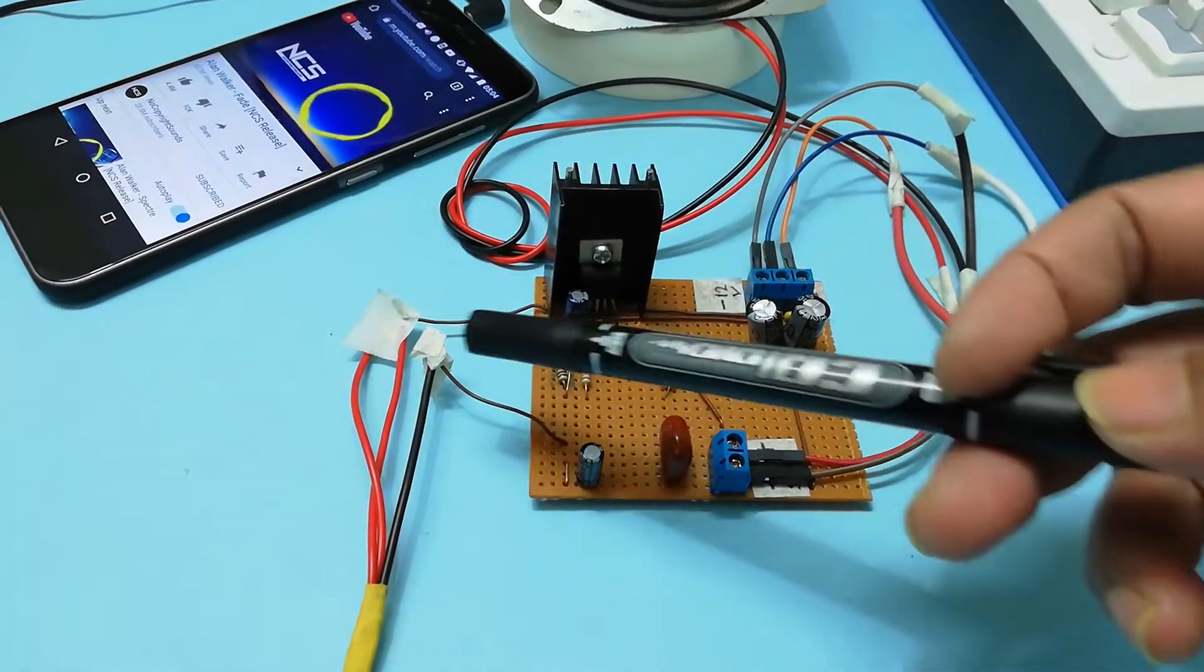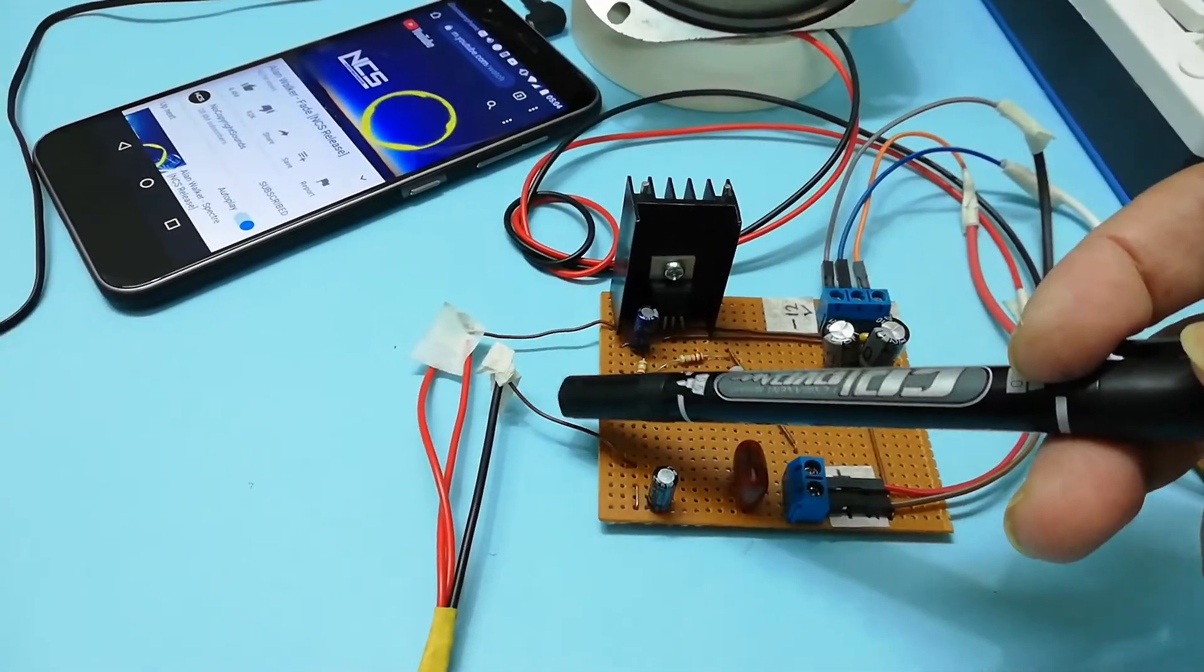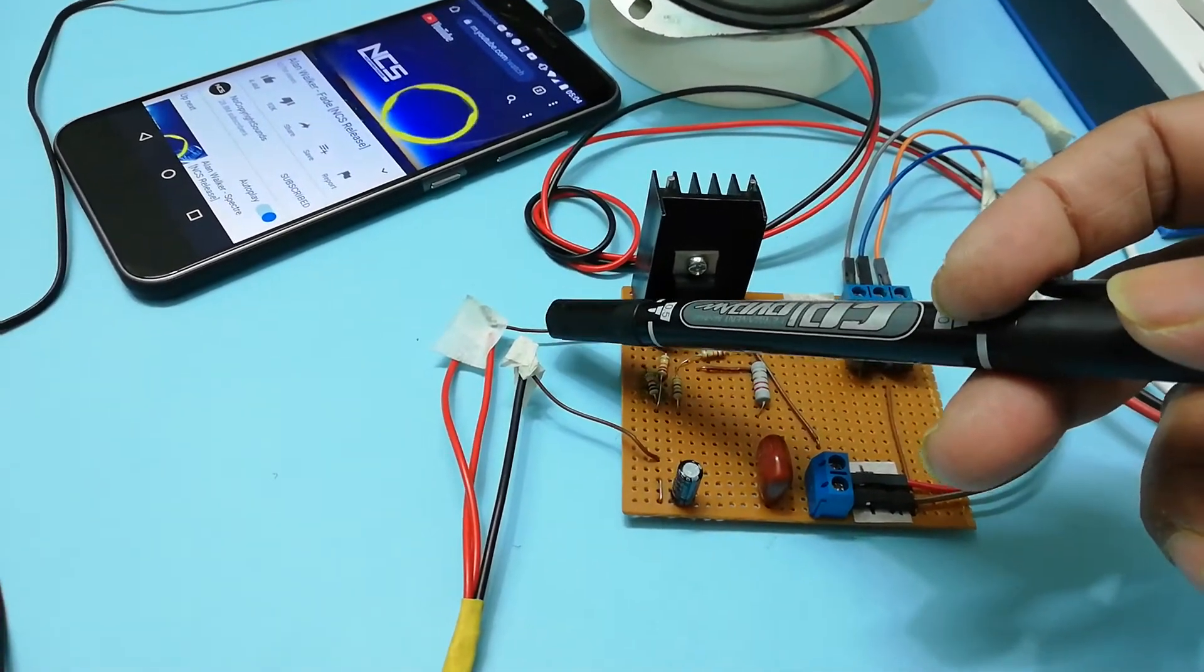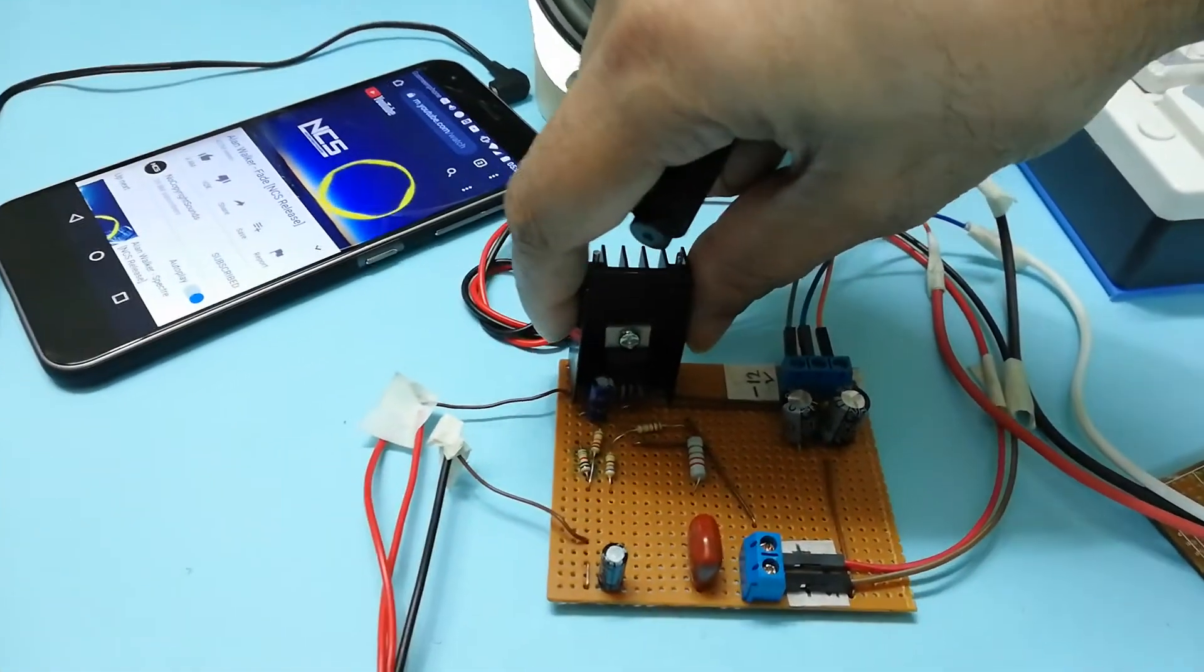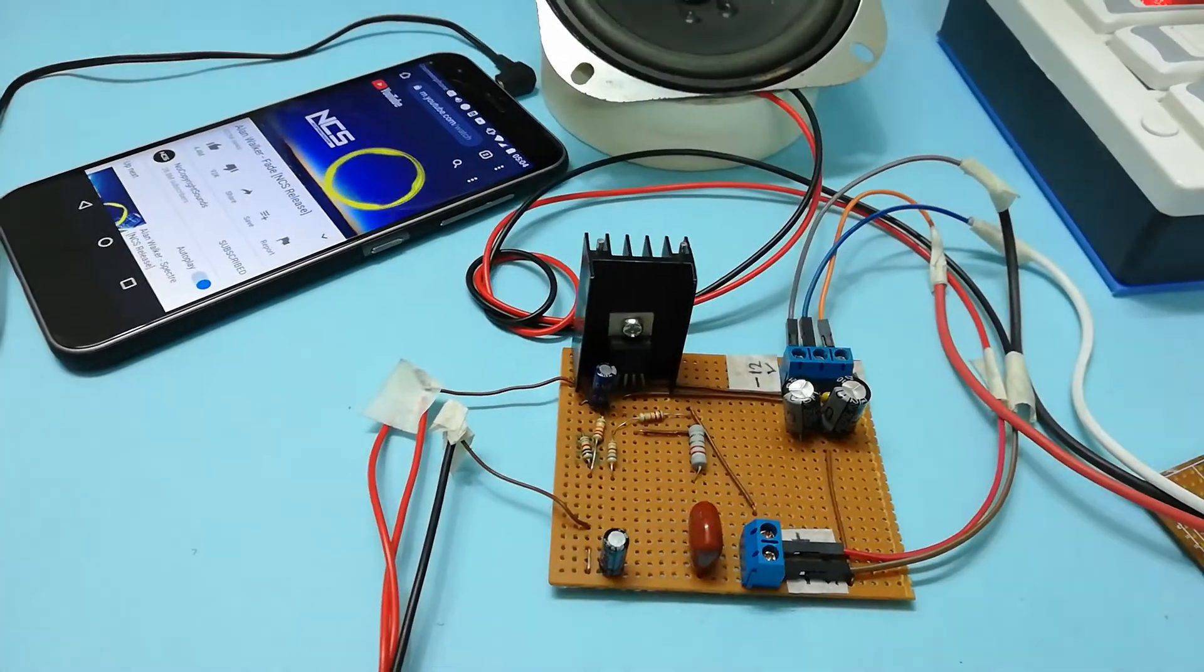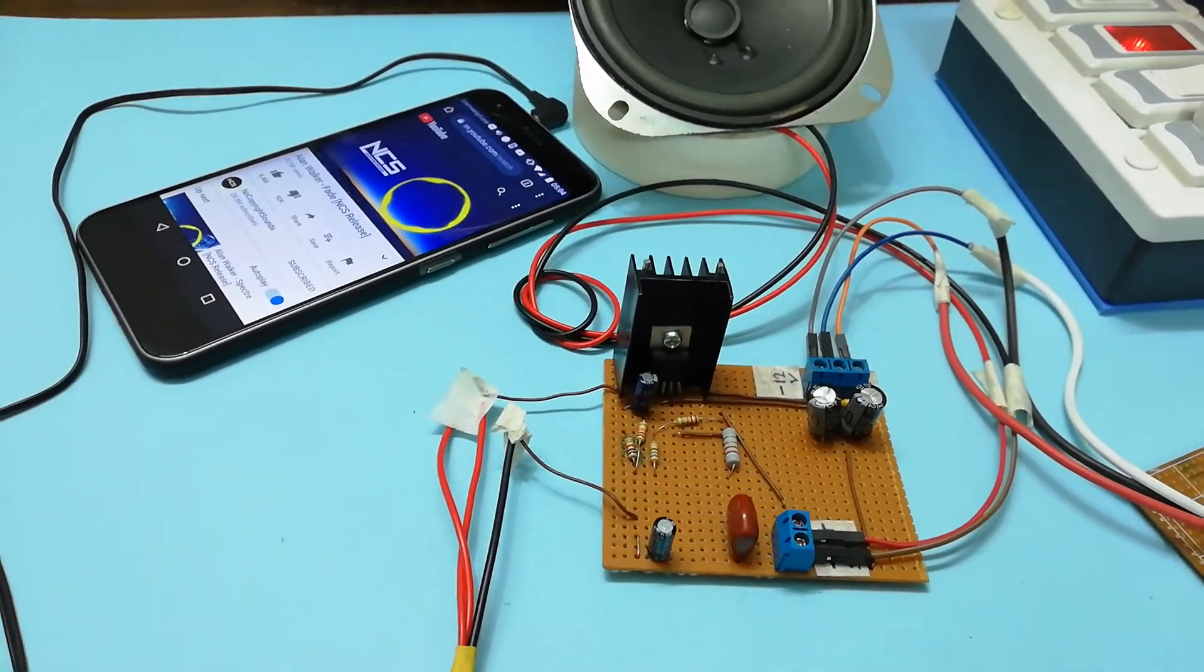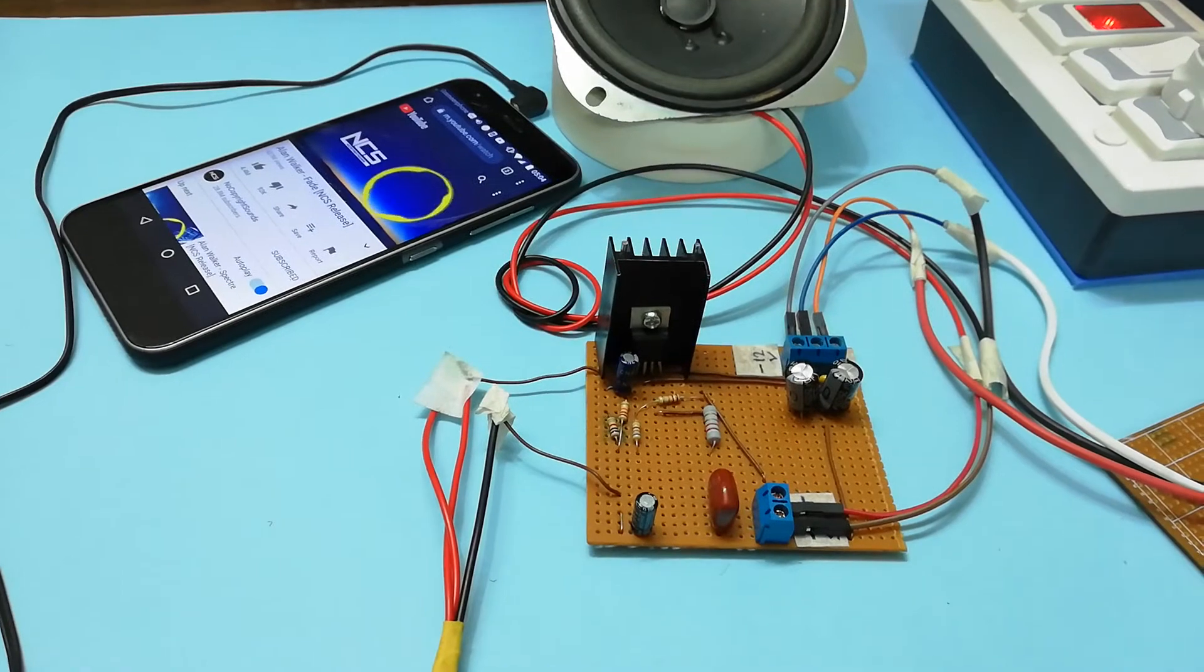And this is the input connection. This is the ground and this is the input plus. And here's the heat sink I used. You can use a bigger heat sink if your IC gets heated.